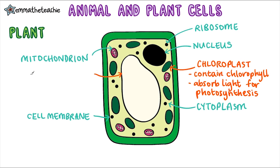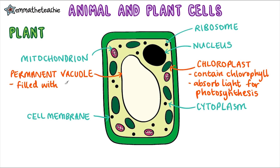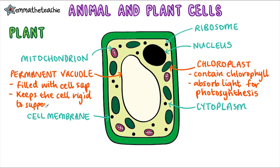We've also got this big white blob, which is a permanent vacuole. Its function is to be filled with cell sap, and that's important because it helps keep the cell rigid. You'll notice that plants don't have skeletons, so they need this to help support them.